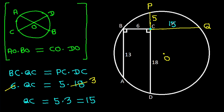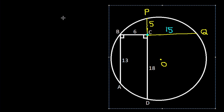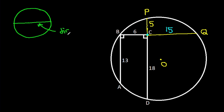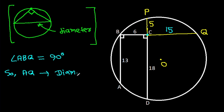QC is 15. In any circle, a diameter makes an angle of 90 degrees on the circle. We have angle ABQ is 90 degrees, so AQ will be the diameter.